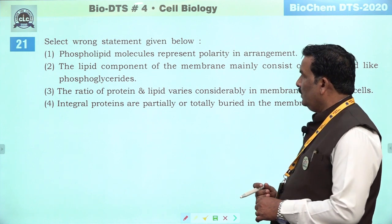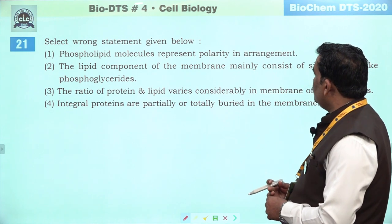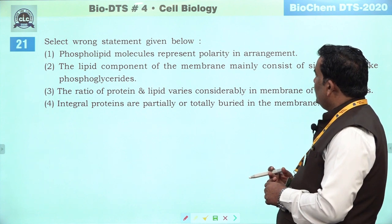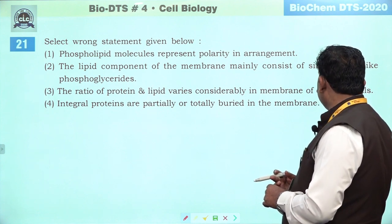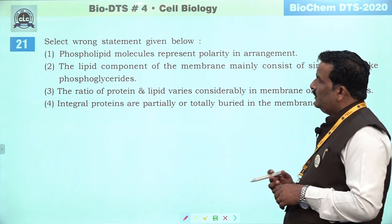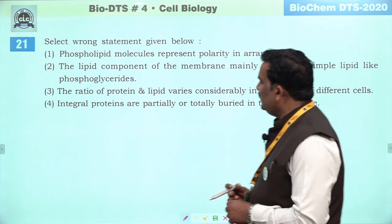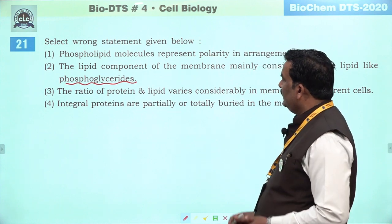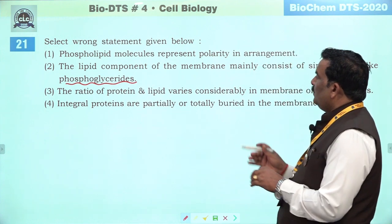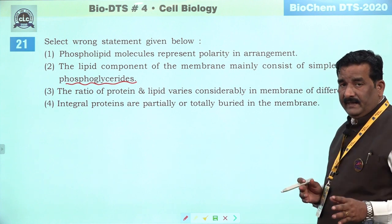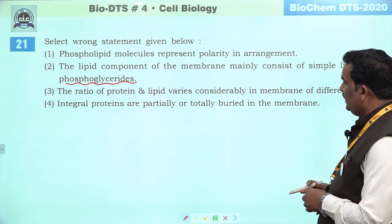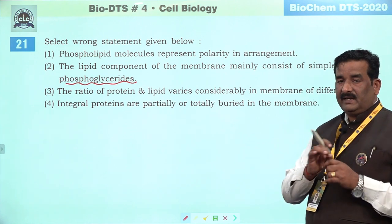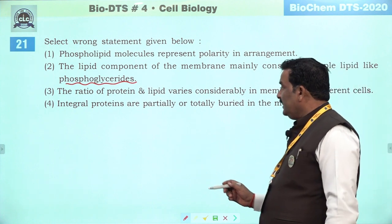Next question: select wrong statement given below. Phospholipid molecule represent polarity in arrangement — bilkul sahi hai, inका head towards the outer hai. The lipid component of the membrane mainly consists of simple lipid like phosphoglyceride — phosphoglyceride is not a simple lipid, while it is a conjugated lipid, isliye second yahan par galat ho raha hai. The ratio of protein to lipid varies considerably in different membranes — bilkul sahi hai. Integral protein are partially or totally embedded in the membrane — yeh bhi sahi hai. Second is the right answer.